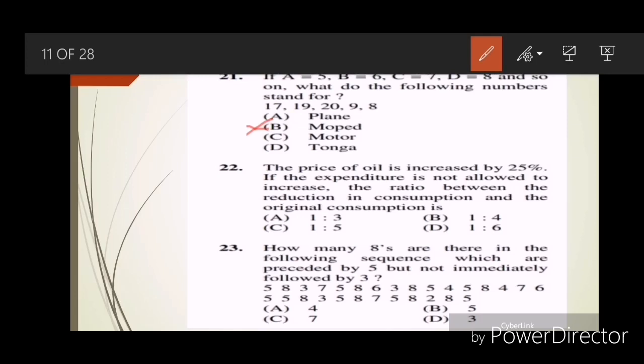Question twenty-two: The price of oil is increased by 25%. If the expenditure is not allowed to increase, the ratio between the reduction in consumption and the original consumption is? Answer is C, 1 is to 5. Question twenty-three: How many 8s are there in the following sequence which are preceded by 5 but not immediately followed by 3? Answer is A, that is 4.